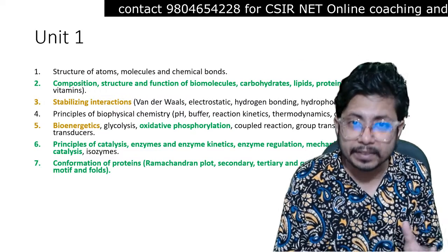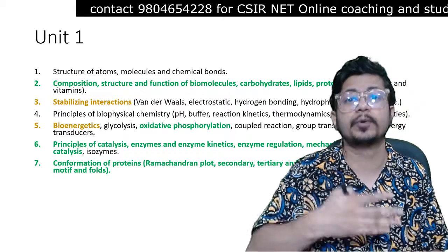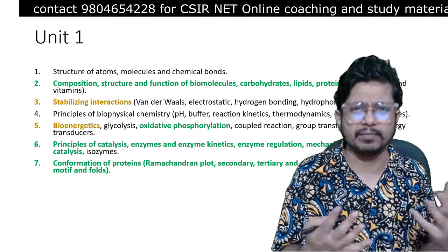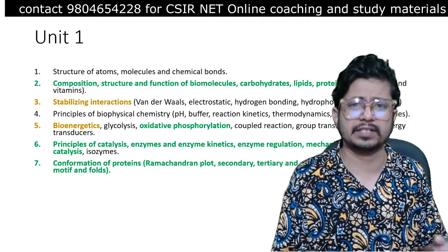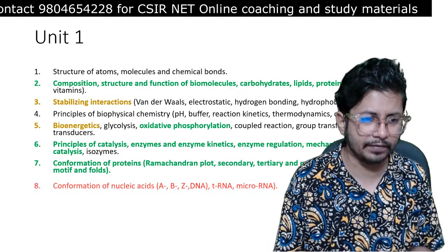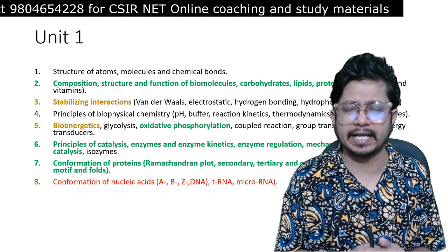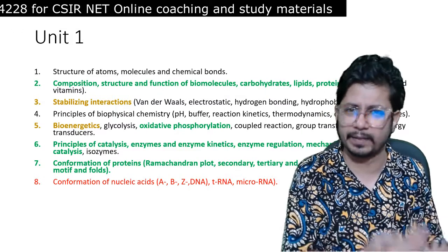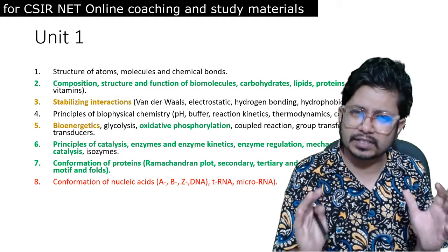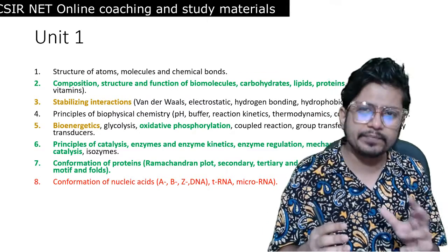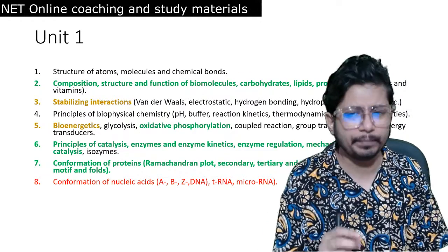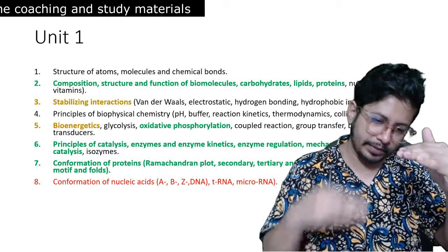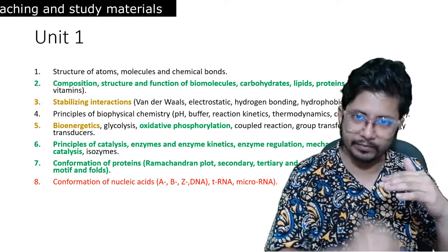The next topic is conformation of proteins: the structural elements, secondary structure, tertiary structure, the protein structural hierarchy, Ramachandran plot, domains, motifs — all very very important from this syllabus. We also have conformation of nucleic acids: A, B, and Z DNA, tRNA structures, microRNA — the structural aspects of RNA and DNA nucleic acids. These are important but ranked as the least among the three color codes.